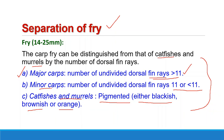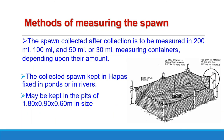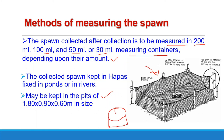Once spawn is collected, it must be stored properly. Spawn is not counted but measured — after collection, spawn is measured in 200 ml, 100 ml, 50 ml, or 30 ml measuring containers depending on the amount. The collected spawn is kept in hapas fixed in a pond or river, or stored in pits of 1.8 × 0.9 × 0.6 m in size. In this way, fish spawn can be collected from natural resources and stored.